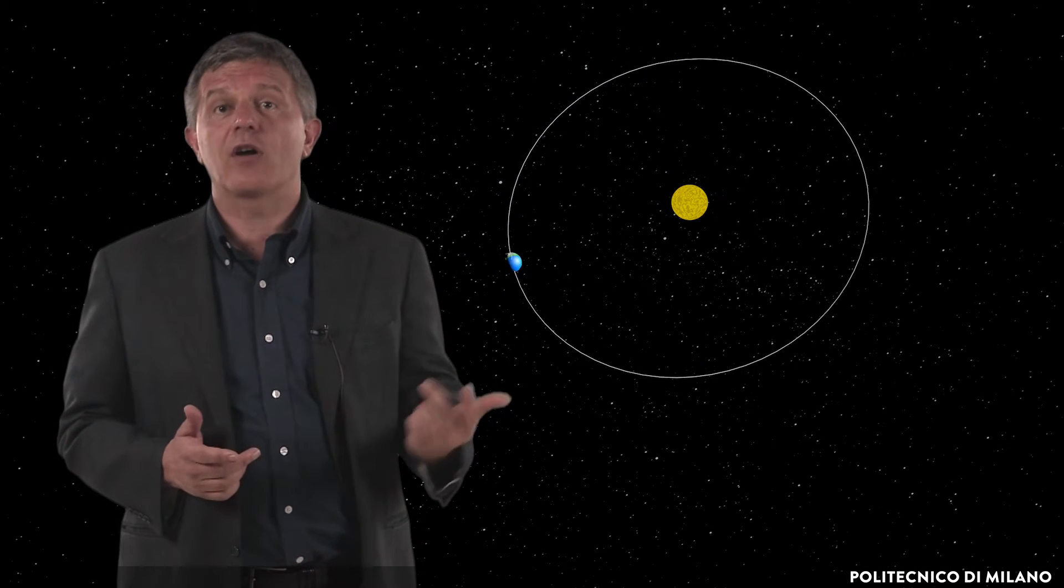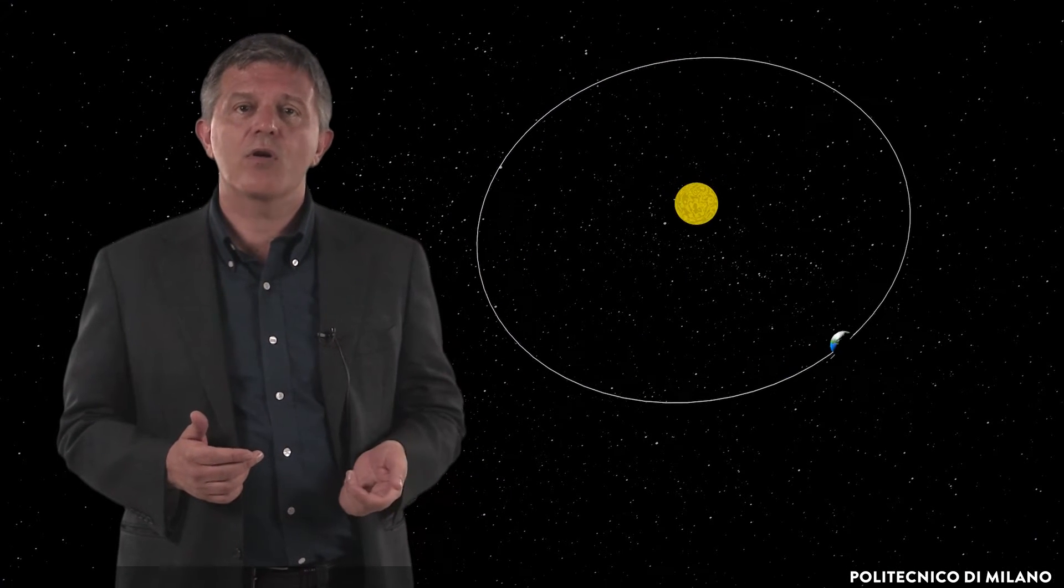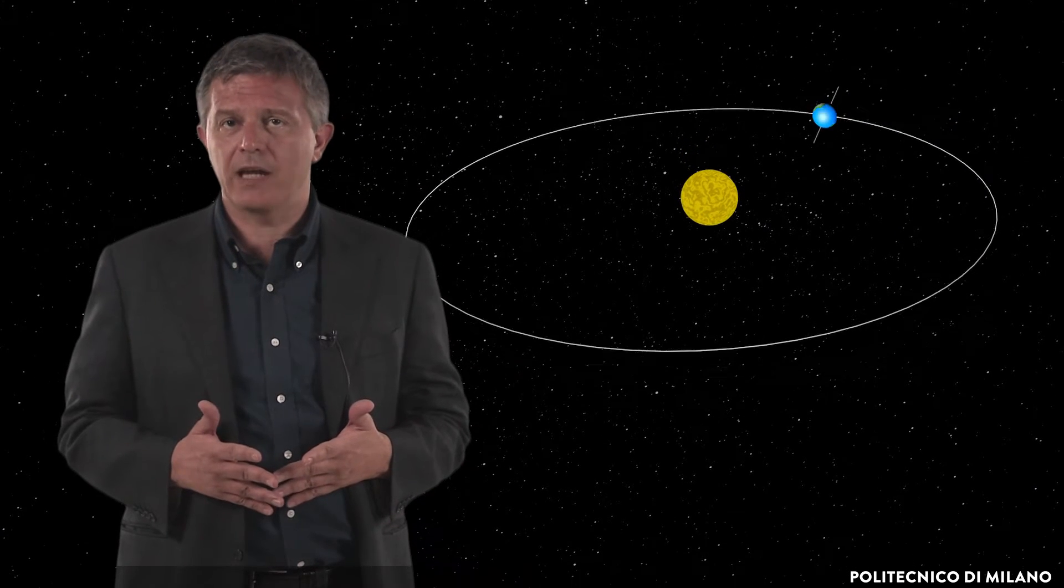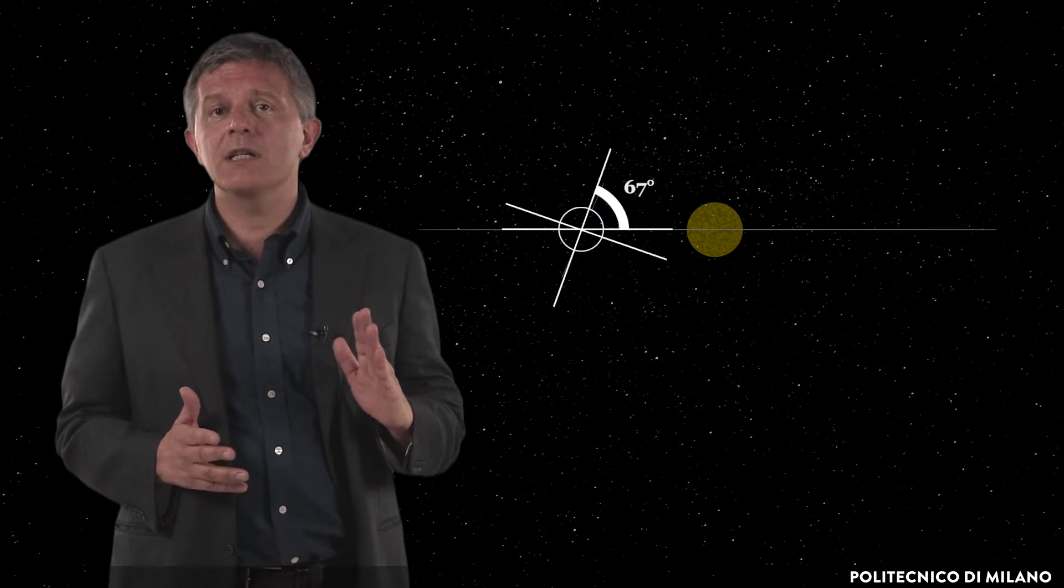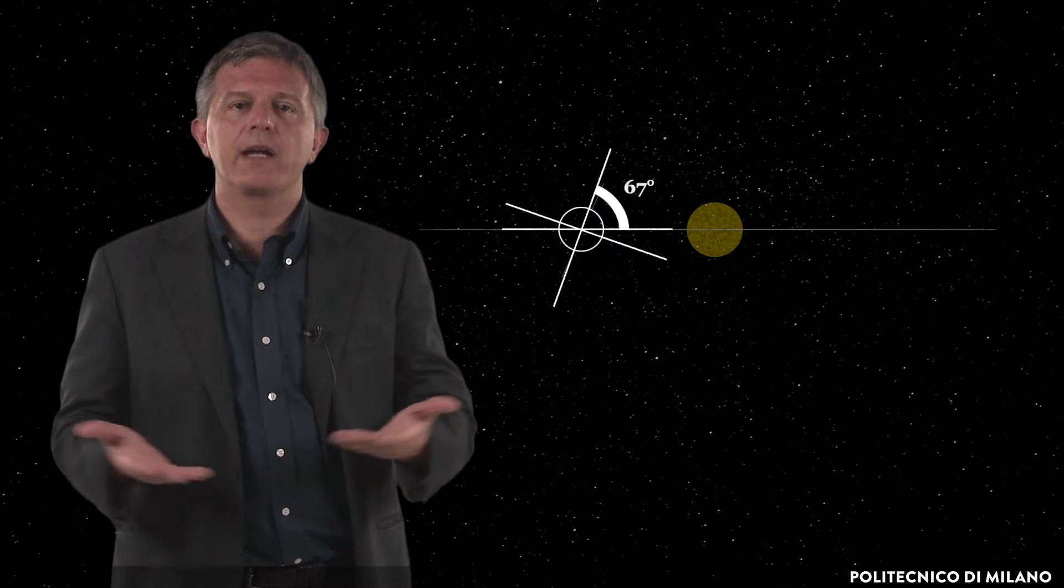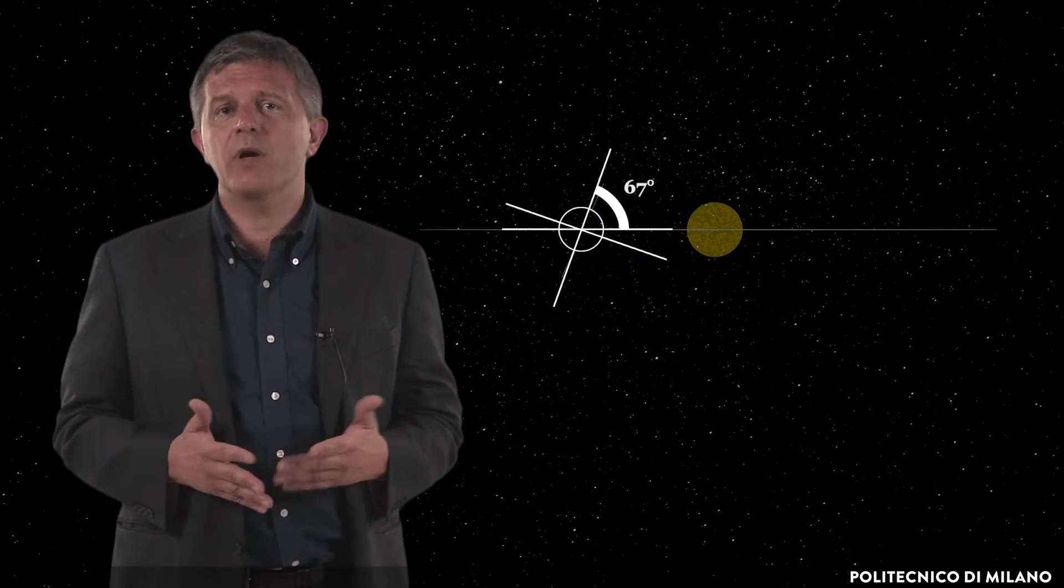The Earth moves along an elliptical orbit around the Sun in a little more than 365 days and also rotates around its own axis, inclined by about 67 degrees with respect to the plane of the orbit, employing about 24 hours to perform a complete turn.